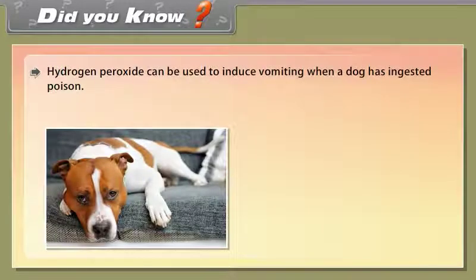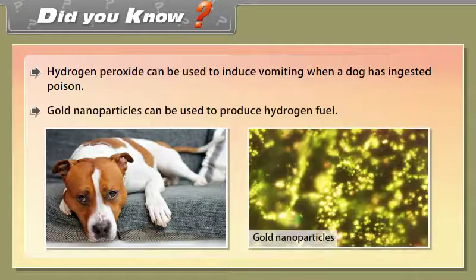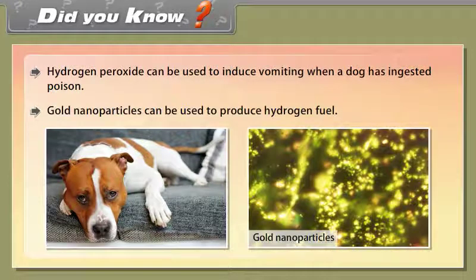Did you know? Hydrogen peroxide can be used to induce vomiting when a dog has ingested poison. Gold nanoparticles can be used to produce hydrogen fuel.